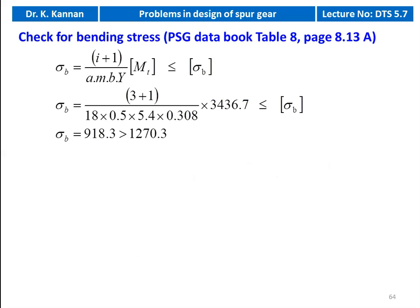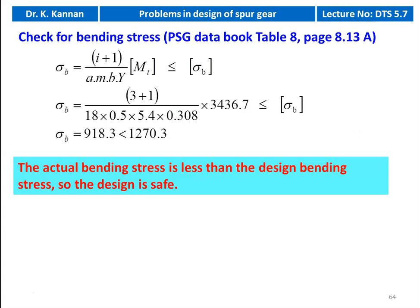Then we check for the bending stress: sigma_b = (i+1)/(a×m×b×Y) × design torque = (3+1)/(18×0.5×5.4×0.308) × 3436.7. The actual bending stress is 918.3, which is less than the design bending stress 1270.3. So the actual bending stress is less than the design bending stress — the design is safe.